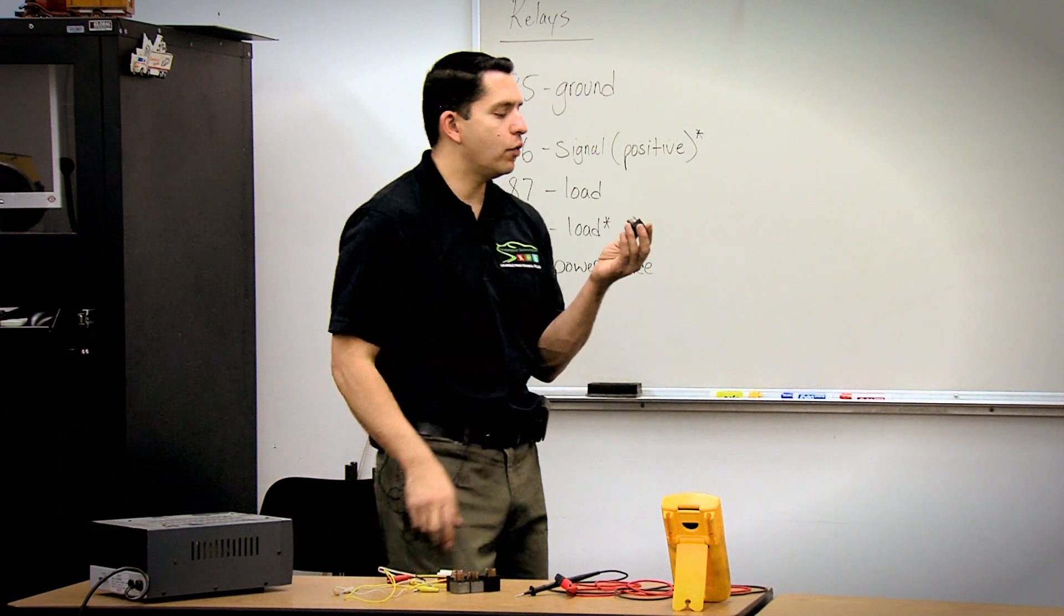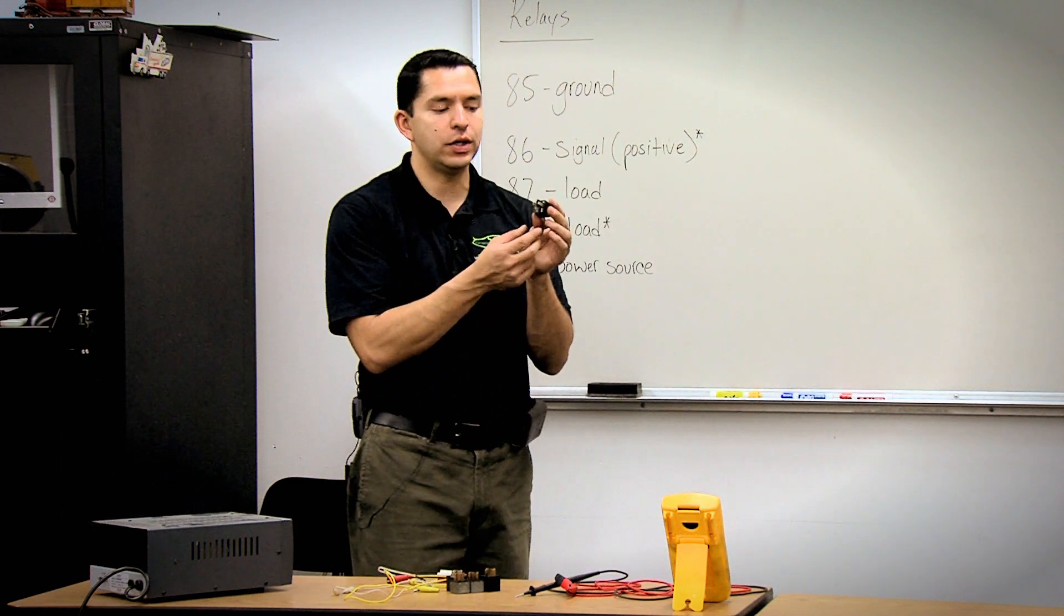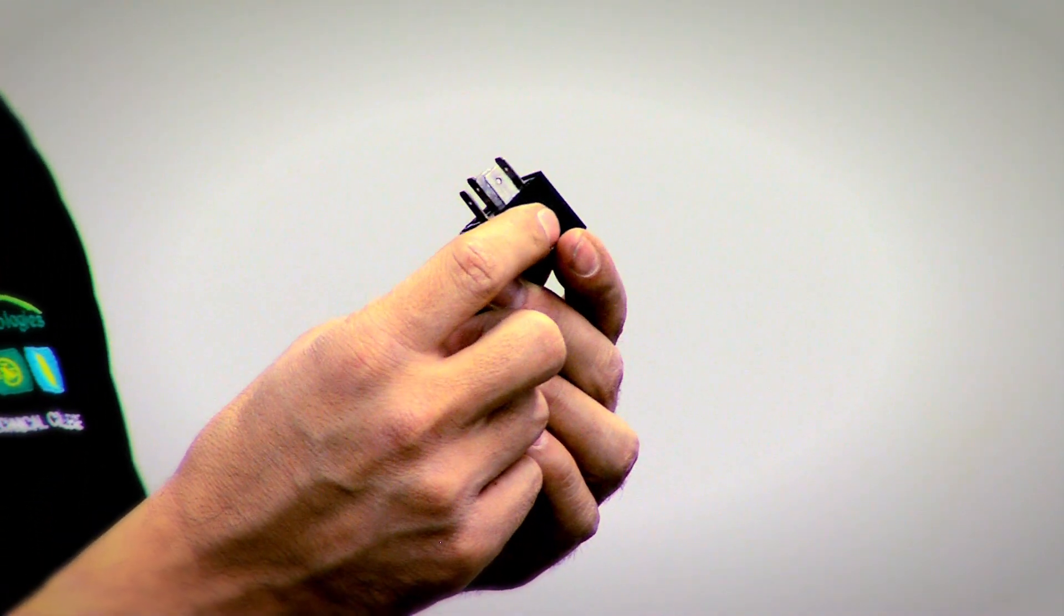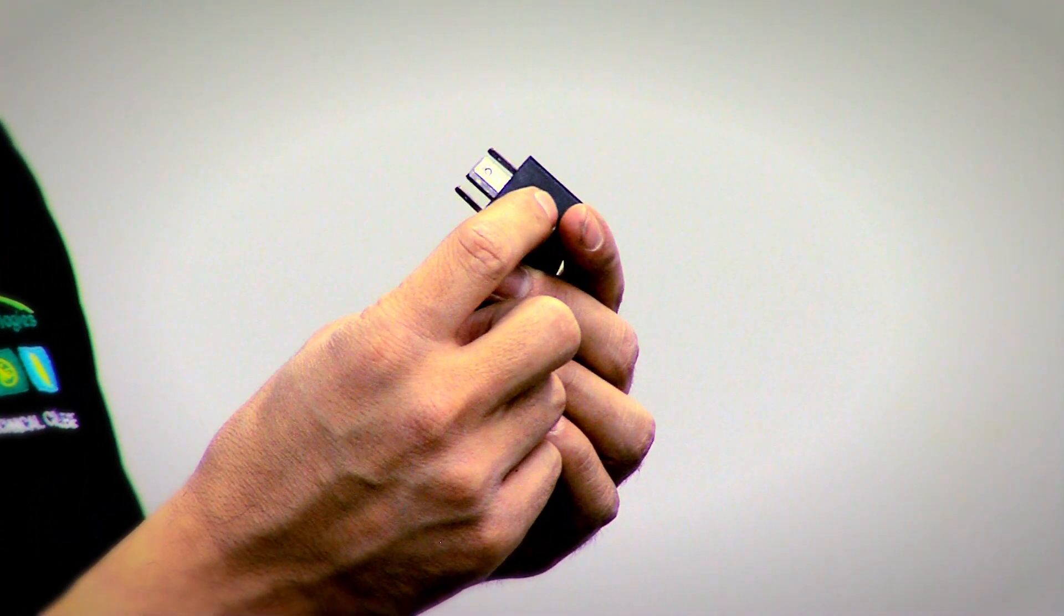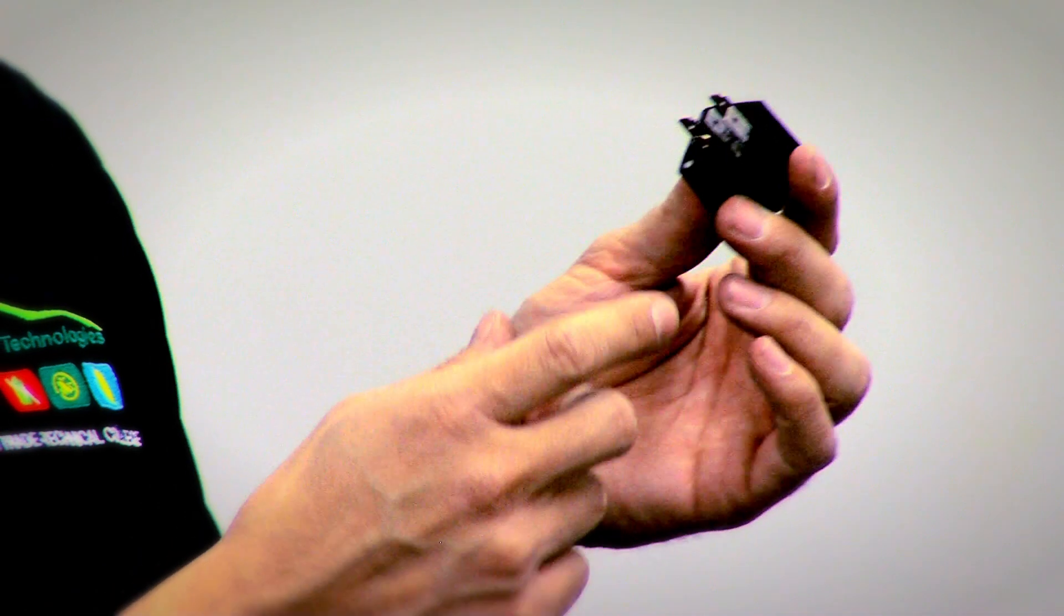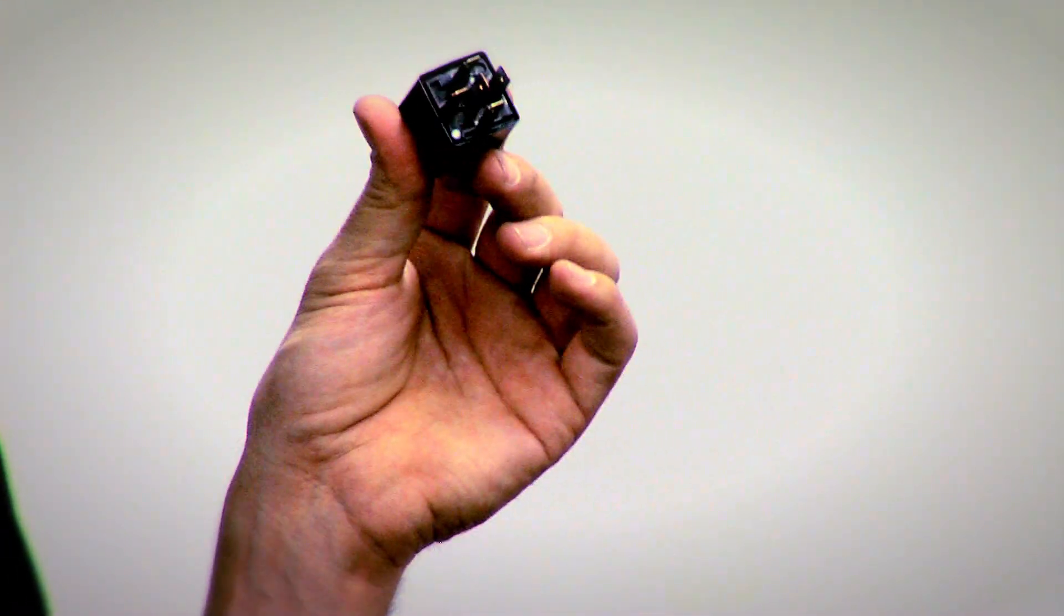When you flip the relay over, one of the things that you will notice is that there are five pins: 86, 85, 87, 87A, and pin number 30.